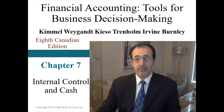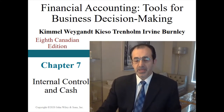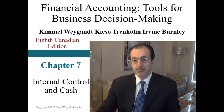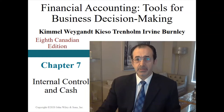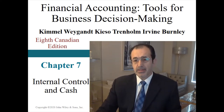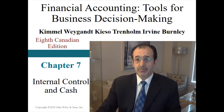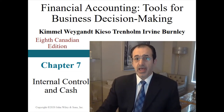Cash is the lifeblood of any company and it must be managed carefully and safeguarded. Even companies that are successful in every other way can go bankrupt if they fail to manage their cash. Today in this chapter we explain the essential features of the internal control system and describe how this system is applied to cash receipts and cash payments. Bank reconciliation and related journal entries will also be discussed, and then I want to explain how cash is reported in the financial statements and describe ways to manage and monitor cash.